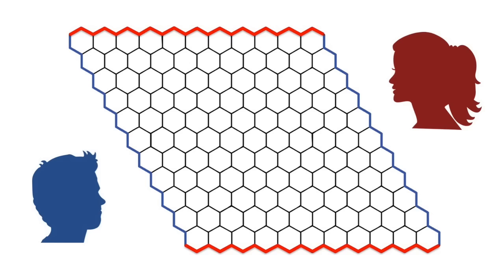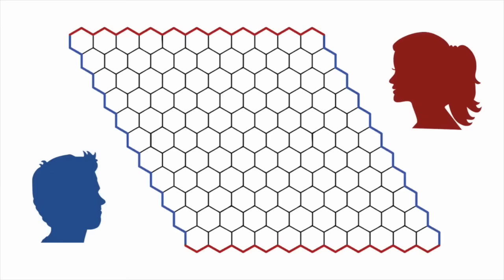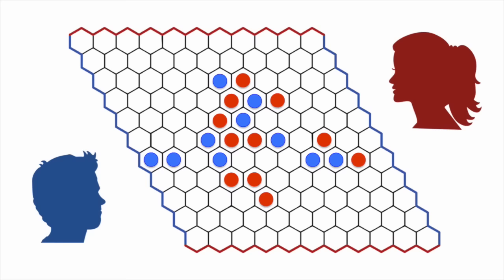The game of Hex is usually played on an 11 by 11 board of hexagons. Two opposite sides of the board are owned by red and the other two by blue. The players take turns placing their pieces on unoccupied hexagons. The first player to connect their opposite sides with a path wins.